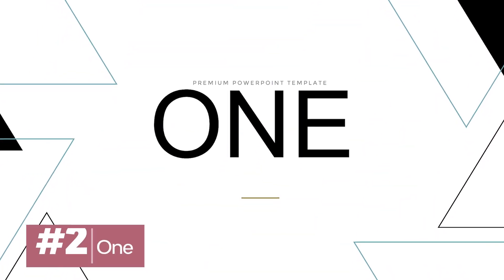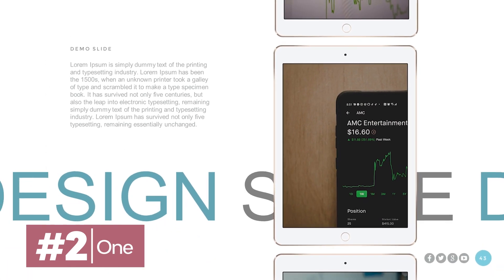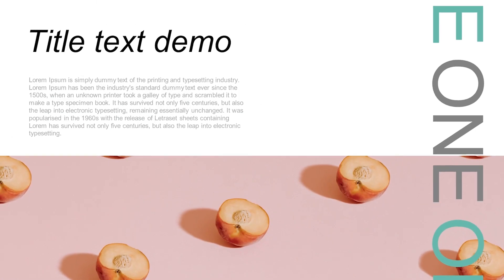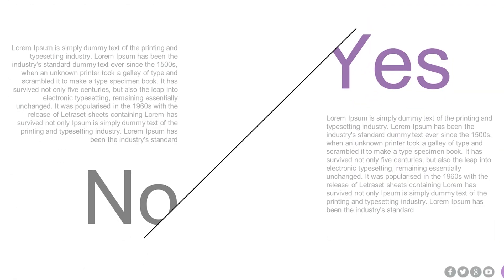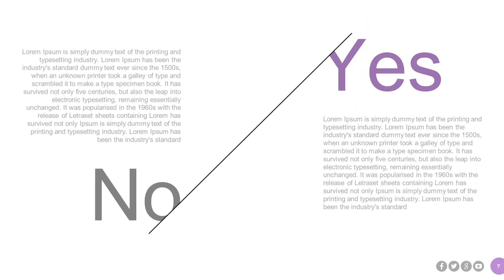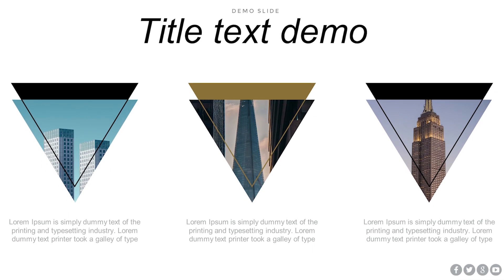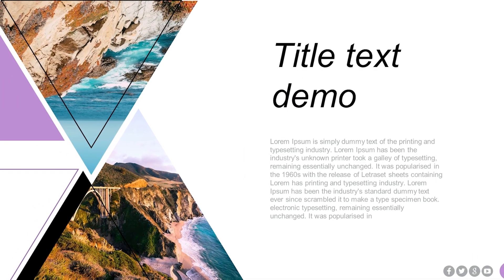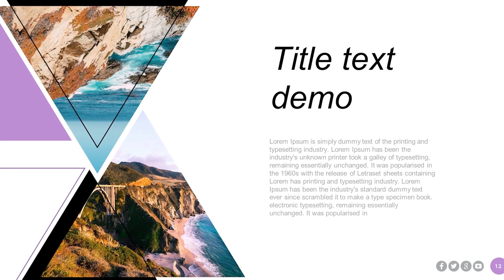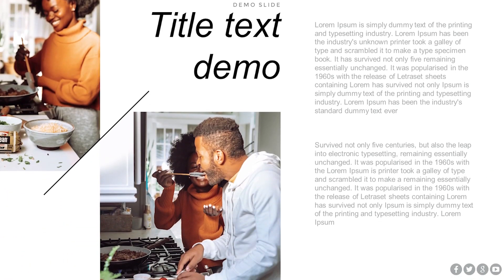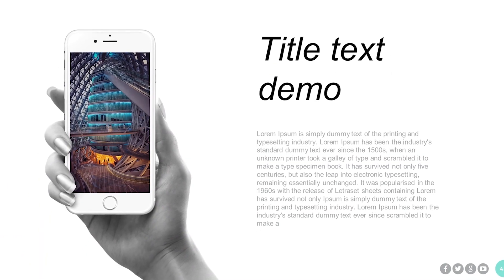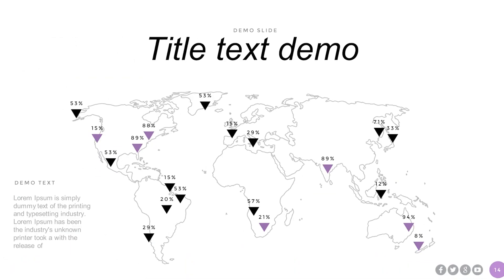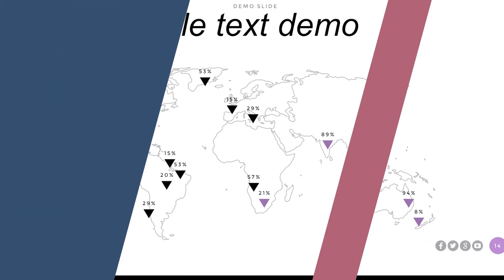Nothing speaks to timeless elegance quite like the style of classic newsprint. Black and white colors provide stunning contrast with vivid images to illustrate the story. This vibe is captured perfectly by Juan — it's one of the best PowerPoint design templates on Elements. This template has all the modern touches you're looking for, such as image placeholders, videos, and a collection of charts and graphs. Download it and give it a try.